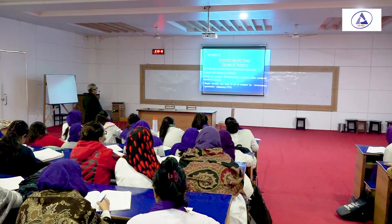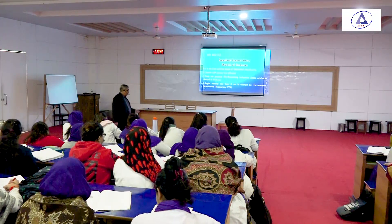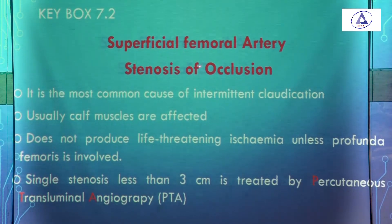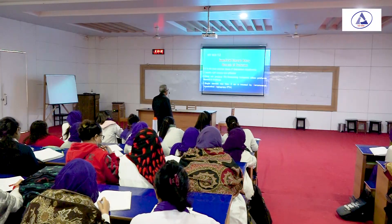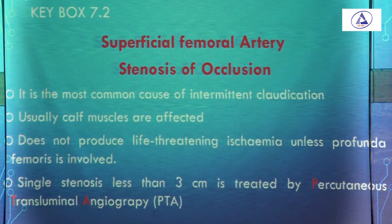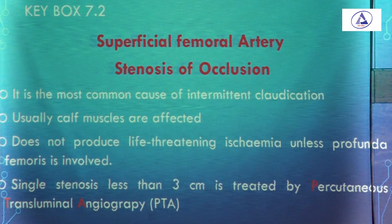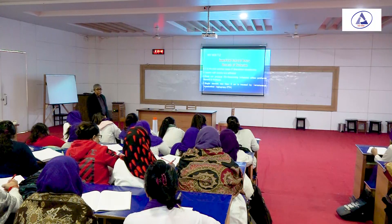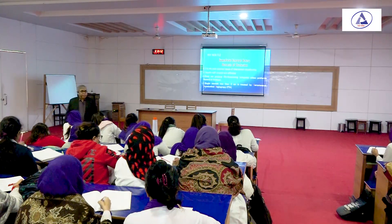Superficial femoral artery stenosis is the most common cause of intermittent claudication. Usually the calf muscles are affected. It does not produce life-threatening ischemia unless the profunda femoris artery is also involved. If the profunda femoris is not involved, it is not a life-threatening consequence.